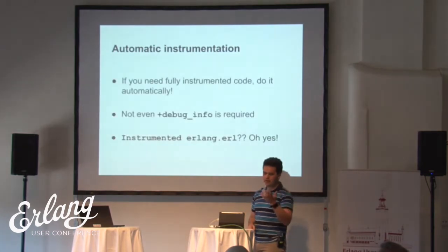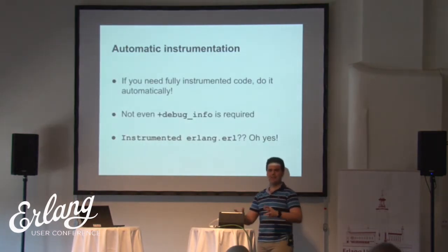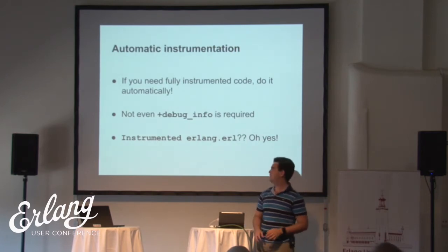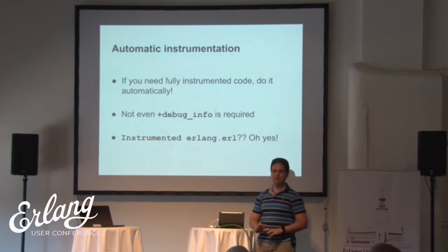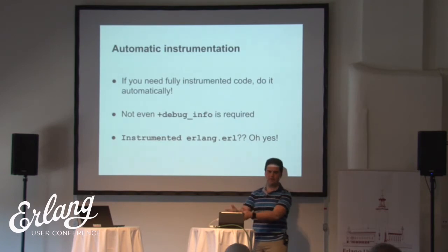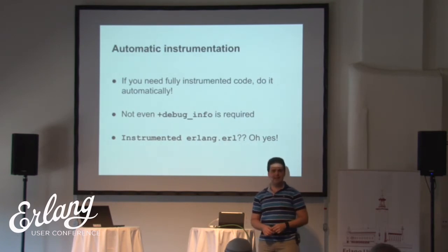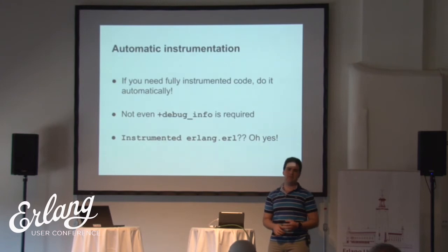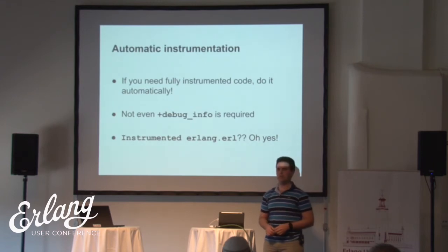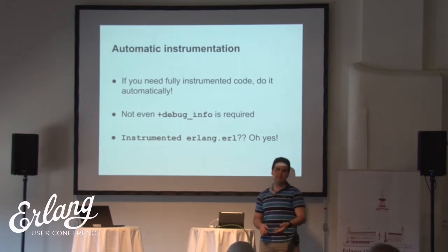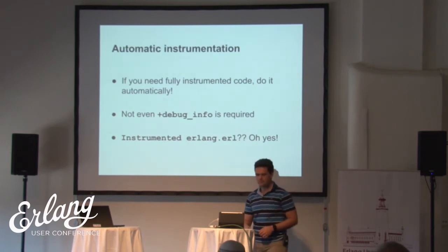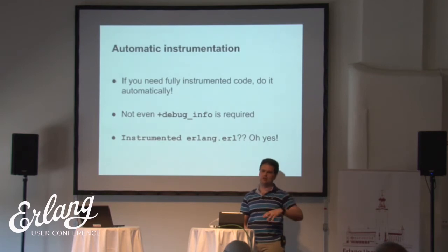So if you really need fully instrumented code for something, it's really easy to do it automatically. You don't even need debug info — I'm thinking of removing the debug info requirement from Dialyzer even, if you have the sources around. And we can even instrument erlang.erl, which might seem a little bit weird, but erlang.erl has some wrappers around calls that are not actually built-ins, so these go through there. Conqueror just takes erlang.erl, instruments it, and loads it, and nothing breaks — and this is amazing.